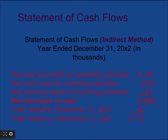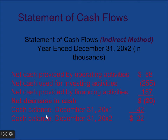Finally, calculating the cash balance by adding all kinds of activities gives us: net cash provided by operating activities, net cash provided by investing activities, and net cash provided by financing activities. The net increase or decrease in cash is calculated, then we find last year's cash balance and deduct or add to get this year's ending cash balance.